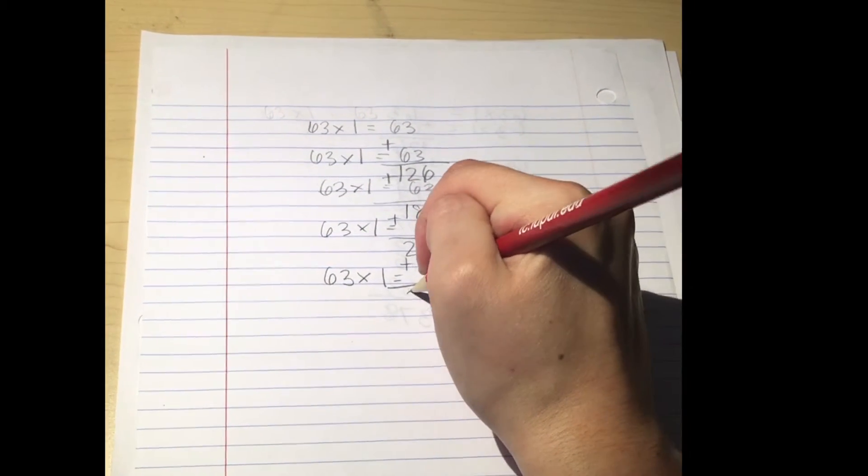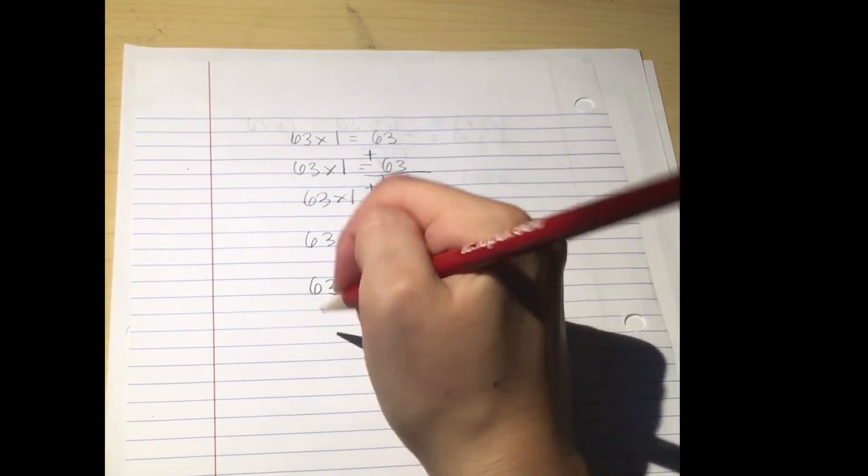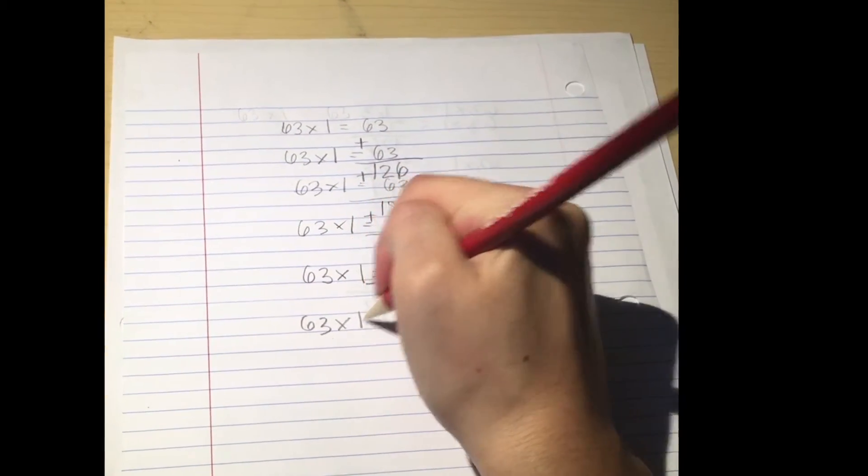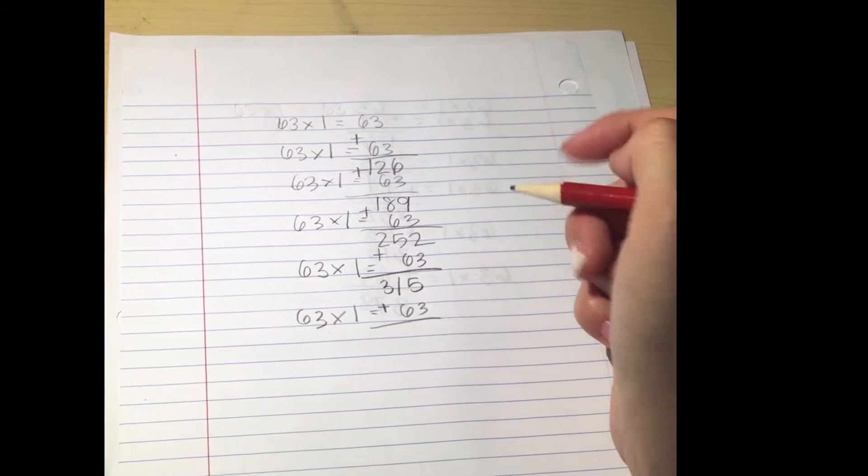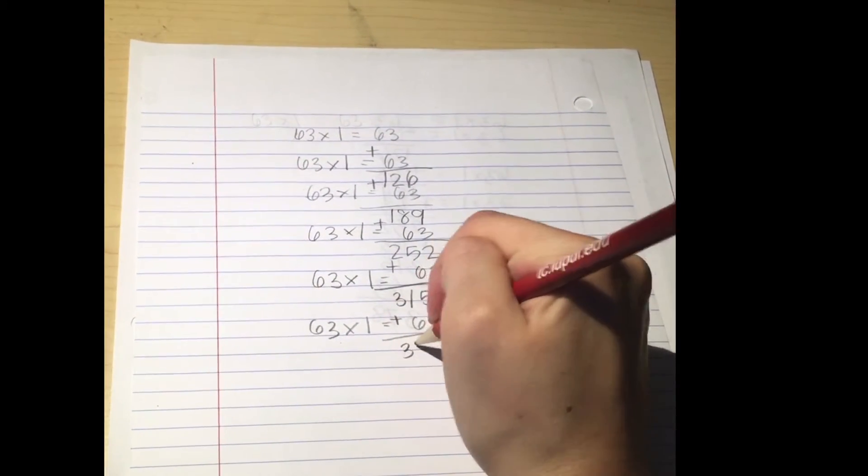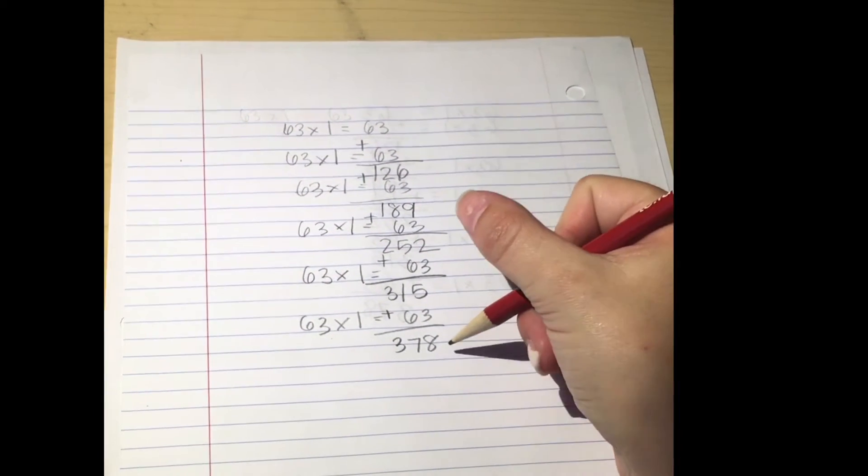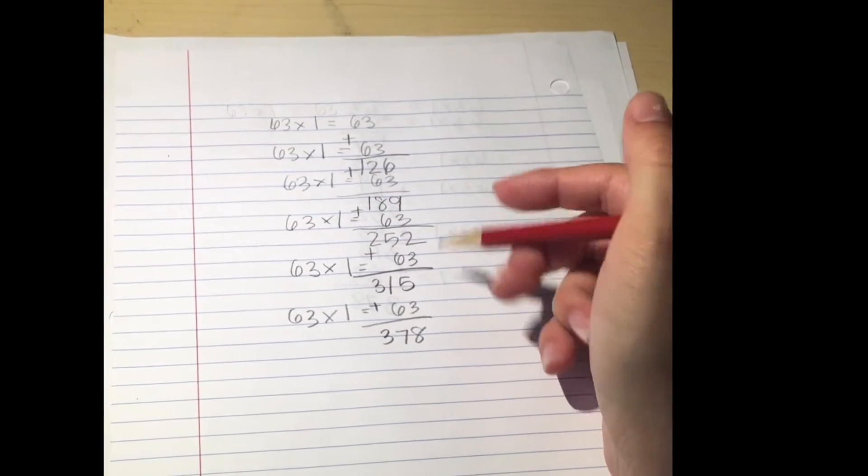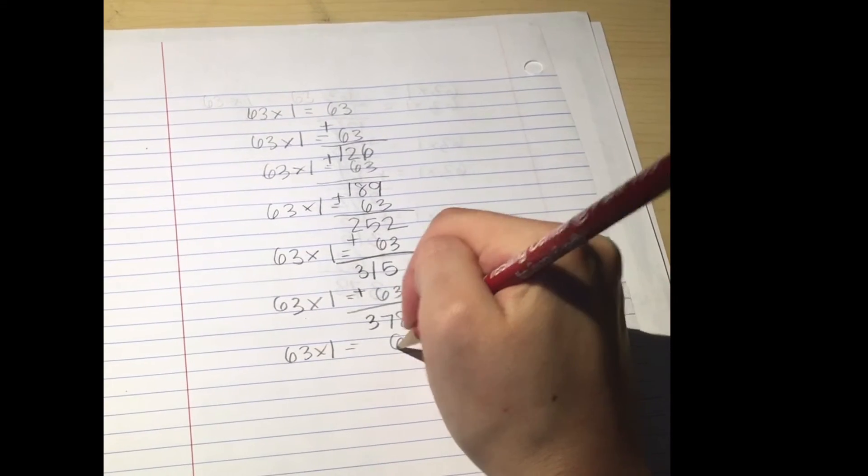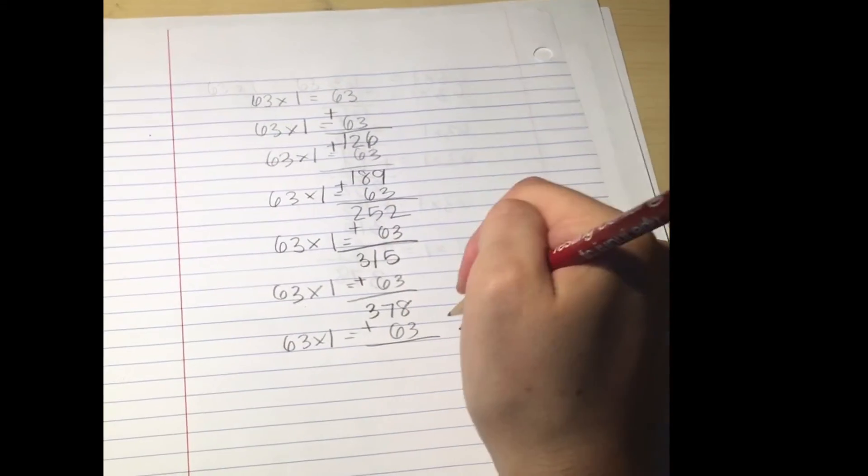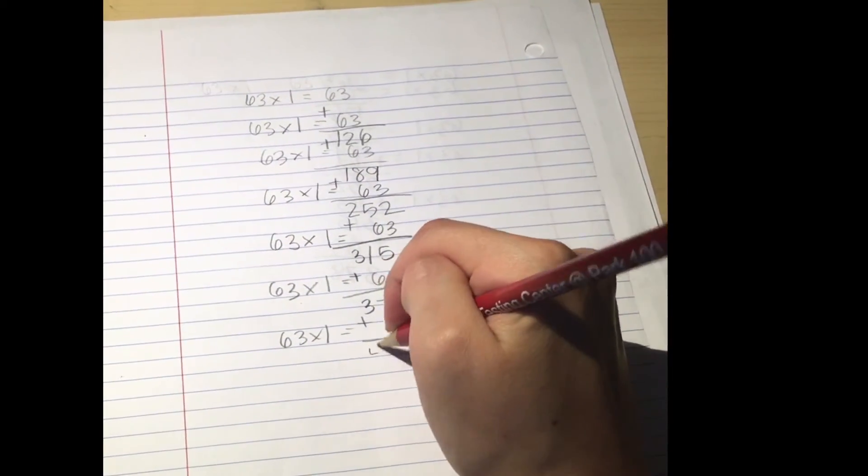And you get 315. We're almost there. So 63 times 1, this time you're going to get 378. As you can see, we keep getting closer and closer to 441, so let's add another 63 times 1 to it. And when you do that, you should get 441.